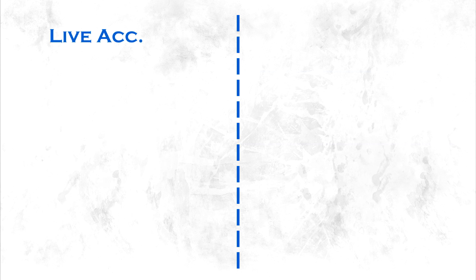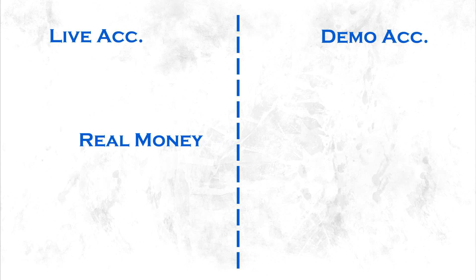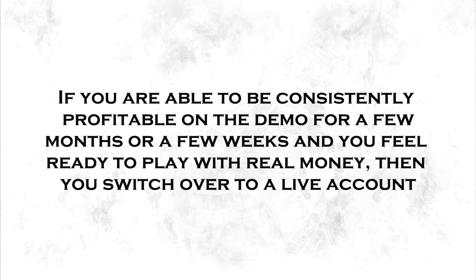The next thing I want to talk about is accounts. There are two different types of accounts. You can choose between a live account and a demo account. If you are trading a live account you put real money in the game, so whenever you take a trade it is your money that you either win or lose. Before you put your real money into the game you should always start with a demo account. Demo means demonstration. With a demo account you trade with fake money to get started with trading and to learn everything. If you are able to be consistently profitable on the demo for a few months or a few weeks and you feel ready to play with real money, then you switch over to a live account. That's what this course is going to help you with — to put money into your live account, trade it, and then withdraw your profits.